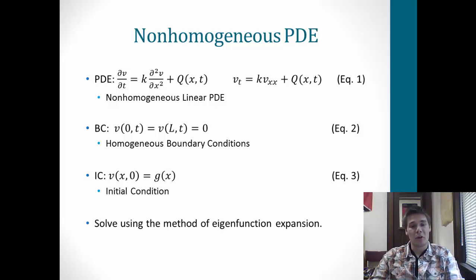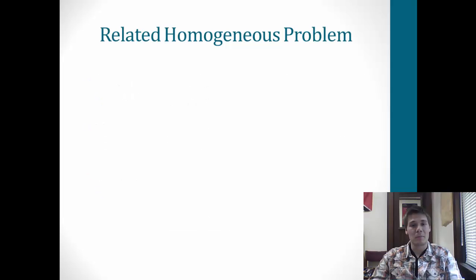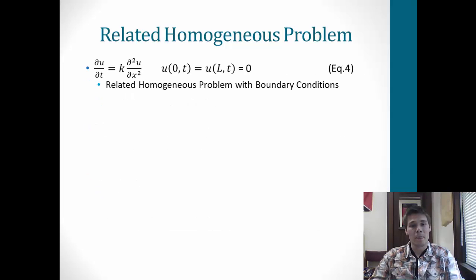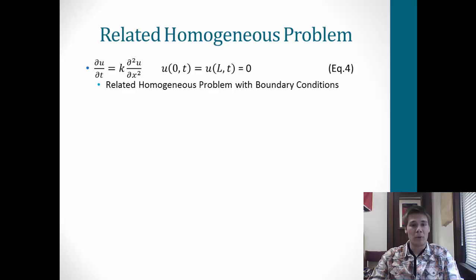So these three equations give us the setup for our problem with homogeneous boundary conditions, initial condition g of x, and our original non-homogeneous linear PDE. As you can guess, we'll be solving using the method of eigenfunction expansion. The first thing we must do is find the related homogeneous problem.